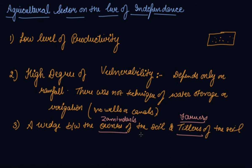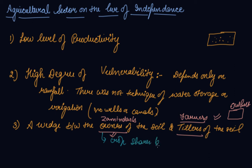Agriculture during the British age was characterized by the wedge between the owners of the soil and the tillers of the soil. The owners were seldom the actual tillers of the soil. While the owners shared the output, they did not share the cost of production. The cost of production was borne by the farmer, whereas the owners had the right on the output. The owners did not pay any cost of production; instead, they charged their share of the output. Owners were only crop sharers — they shared the output but not the cost. They were never committed to the prosperity of agriculture.